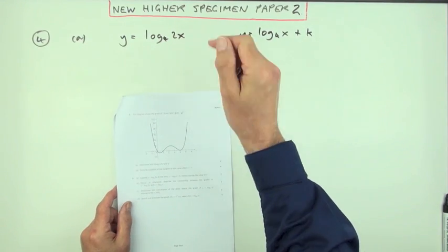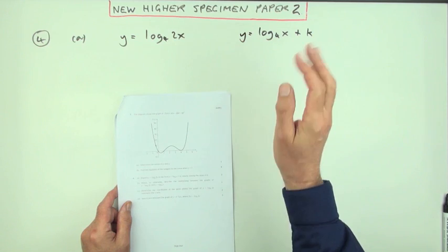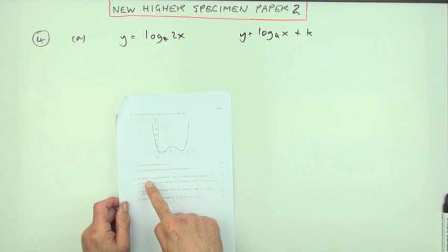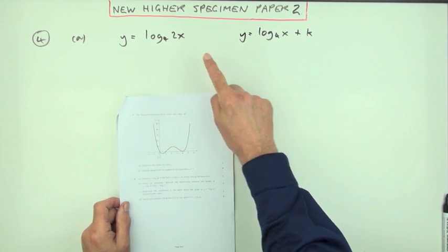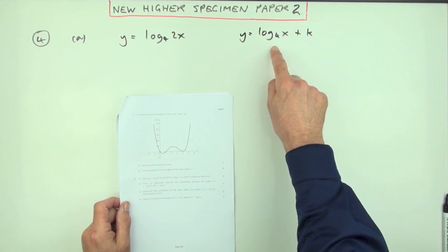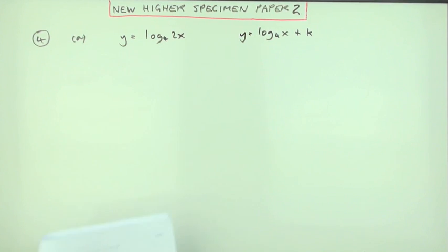Number four from the specimen paper for the new higher paper 2, logs question. Part A: express this in the form of log base 4 of x plus k for two marks.